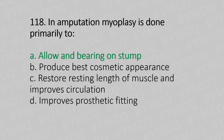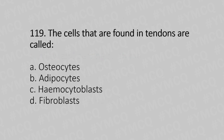Question number 119: The cells that are found in the tendon are called — Option A: osteocytes, Option B: adipocytes, Option C: hemocytoblast, Option D: fibroblasts. The answer is Option D, fibroblasts.